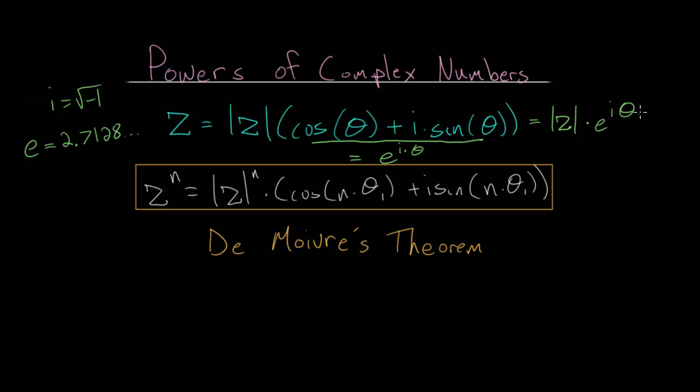And when writing it in its exponential expression, it's much simpler to derive this theorem here. So let's take our complex number z and raise it to the nth power, meaning we will take this exponential form of our complex number and raise all of this to the nth power.